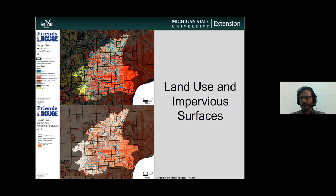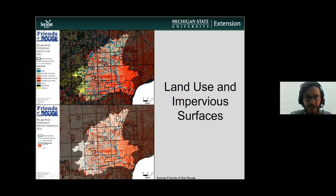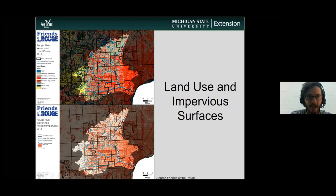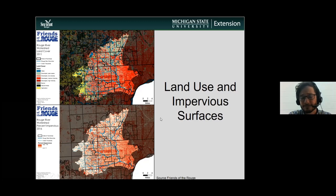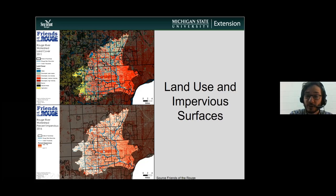Here's the land use or land cover in the Rouge watershed. As you can see, there are some agricultural areas in yellow, but it's mostly a developed watershed — which makes sense given it's in the Detroit metropolitan area. The darker the red, the higher the intensity of development, and this has an obvious connection with impervious surface. As we have higher development intensity, we have more impervious surface.